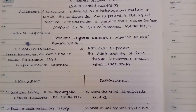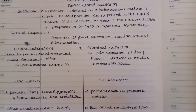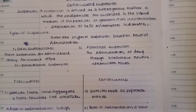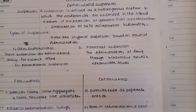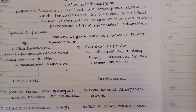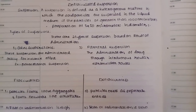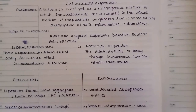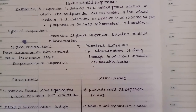If the particles are greater than 1000 nanometers, they are visible — preparation of 1 to 50 micrometers in diameter. Suspension is a heterogeneous mixture because we have two different states, like liquid and solid particles.